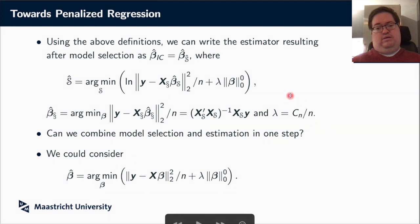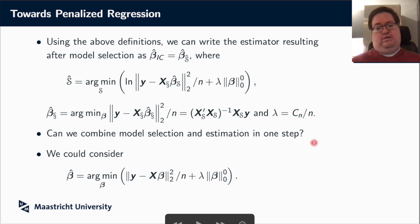So why do we do all this notation? We want to go from variable selection towards penalized regression. Looking back at model selection, we had information criteria that minimized the log of the residual sum of squares plus some penalty term c_n over n times the number of variables, which we can now write using the L0 norm of beta. We just rewrote it and call lambda equal to c_n over n. What we want to do is combine model selection and estimation in a single step.